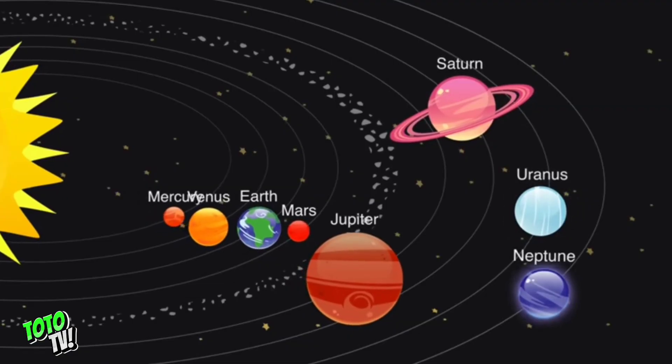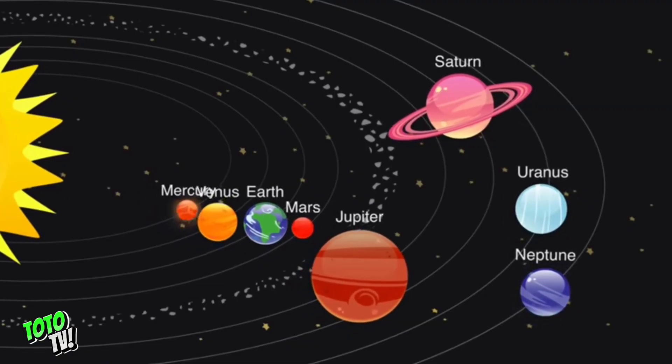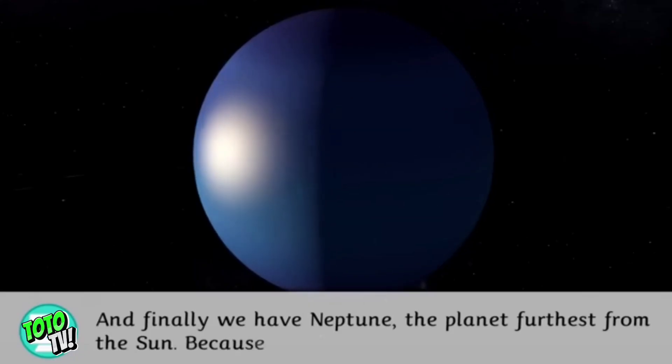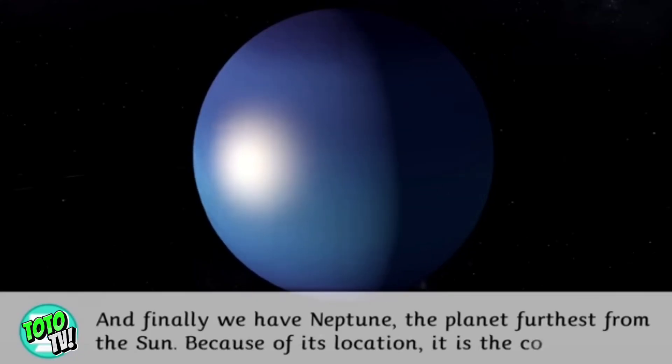And finally, we have Neptune, the planet furthest from the Sun. Because of its location, it is the coldest planet of all.